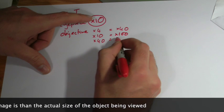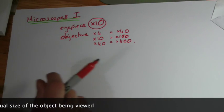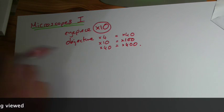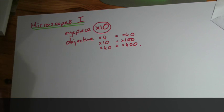And that one, 10 times 40, would be 400. You're not really going to get much beyond that in most of the microscopes you're going to come across at this level.